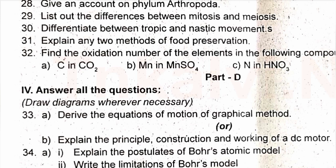Question 34: A) Explain the postulates of Bohr's atomic model, and write the limitations of Bohr's model. Or, B) Explain the ionic bond with an example. Answer either A or B.